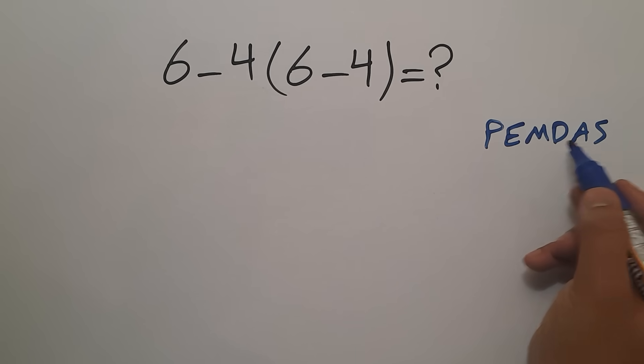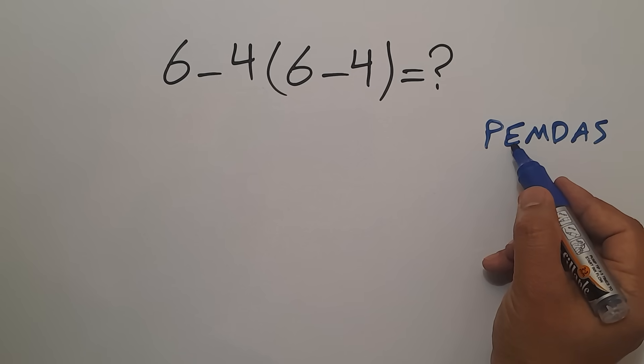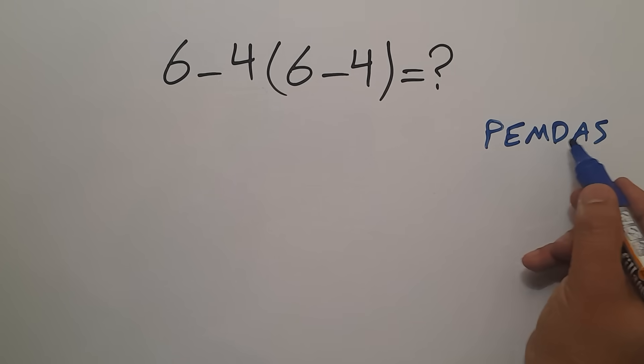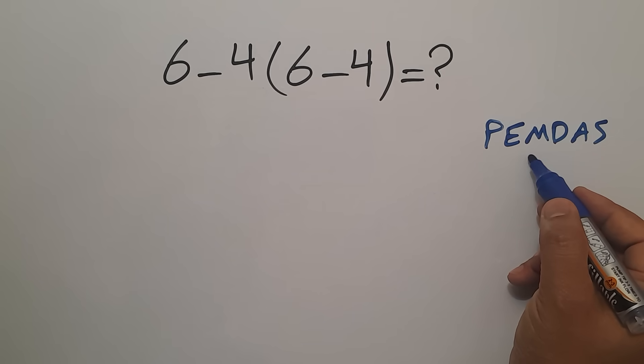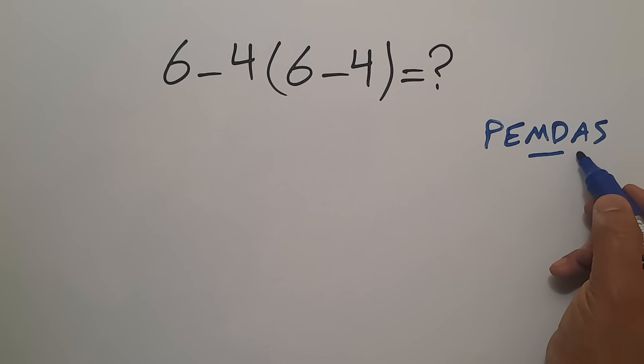We first do parentheses, then exponents, then multiplication and division, and finally addition and subtraction. Remember that multiplication and division have equal priority and we have to work from left to right, and the same applies to addition and subtraction.